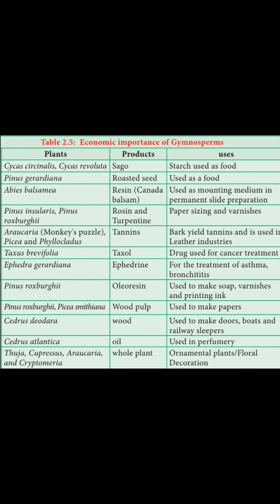Abies balsamea produces resin, which is a gum. This gum is used in permanent slide preparation — for example, when you put a cover slip over a specimen on a slide, the balsam is used to stick and seal it permanently.